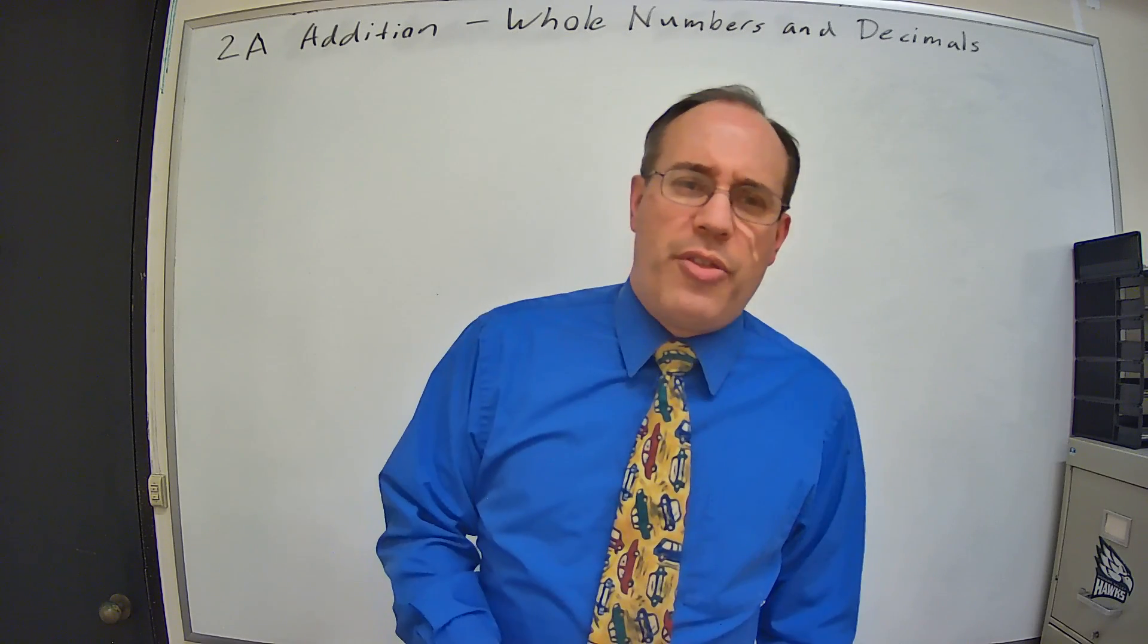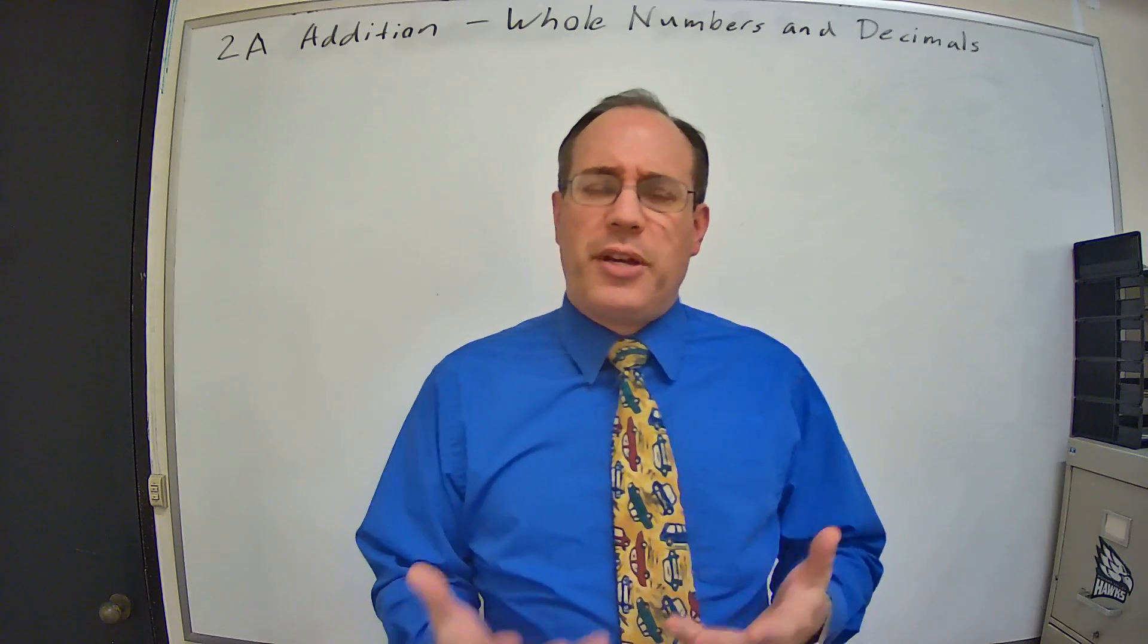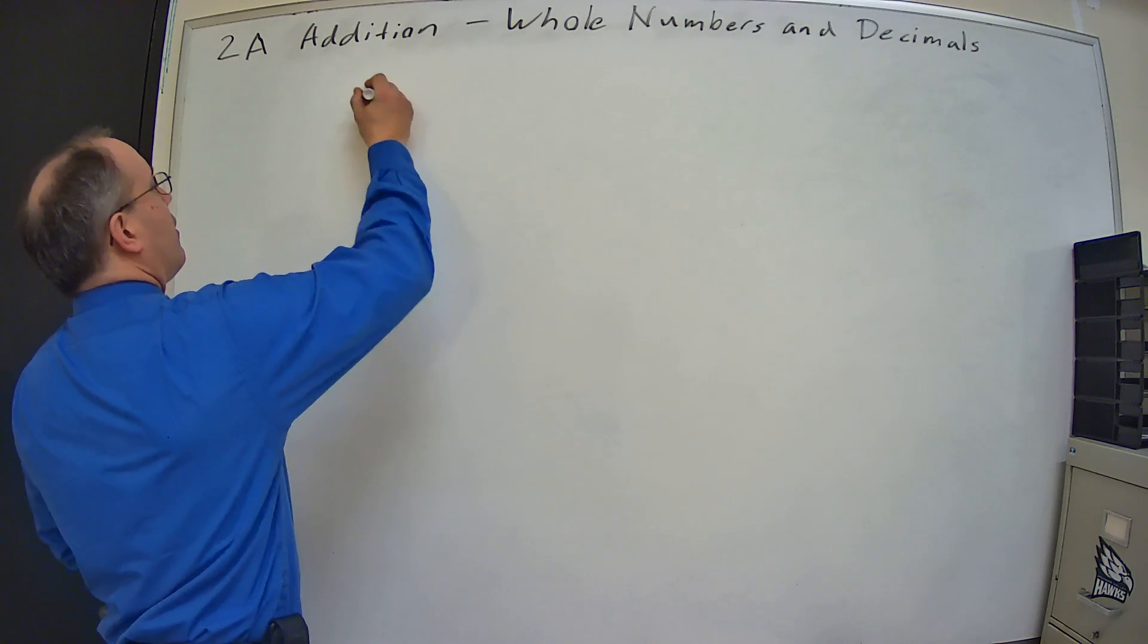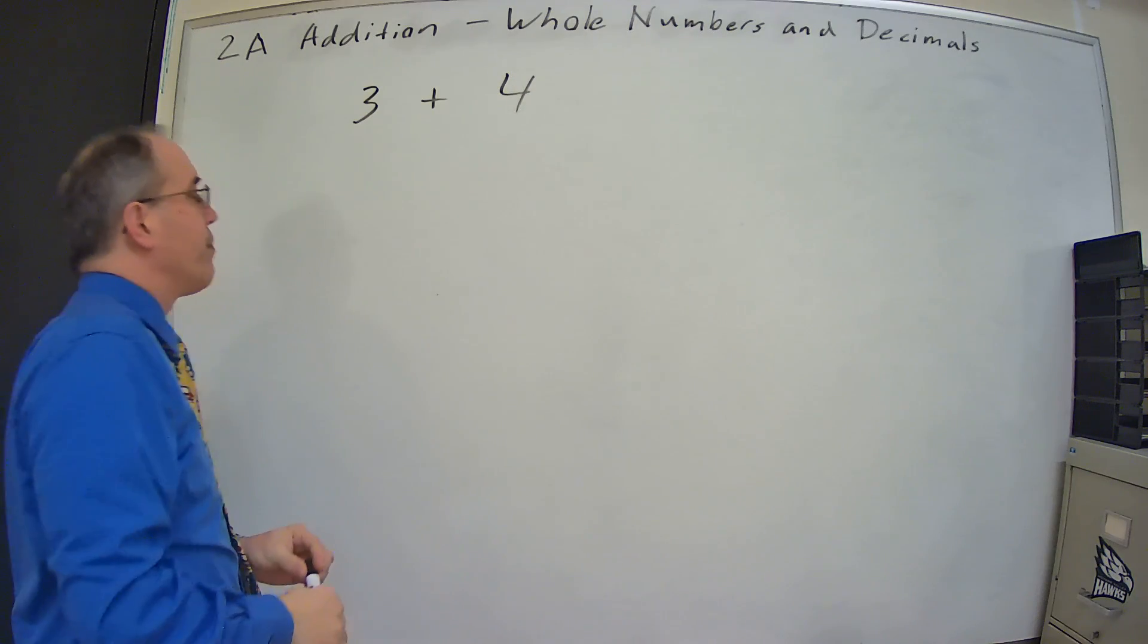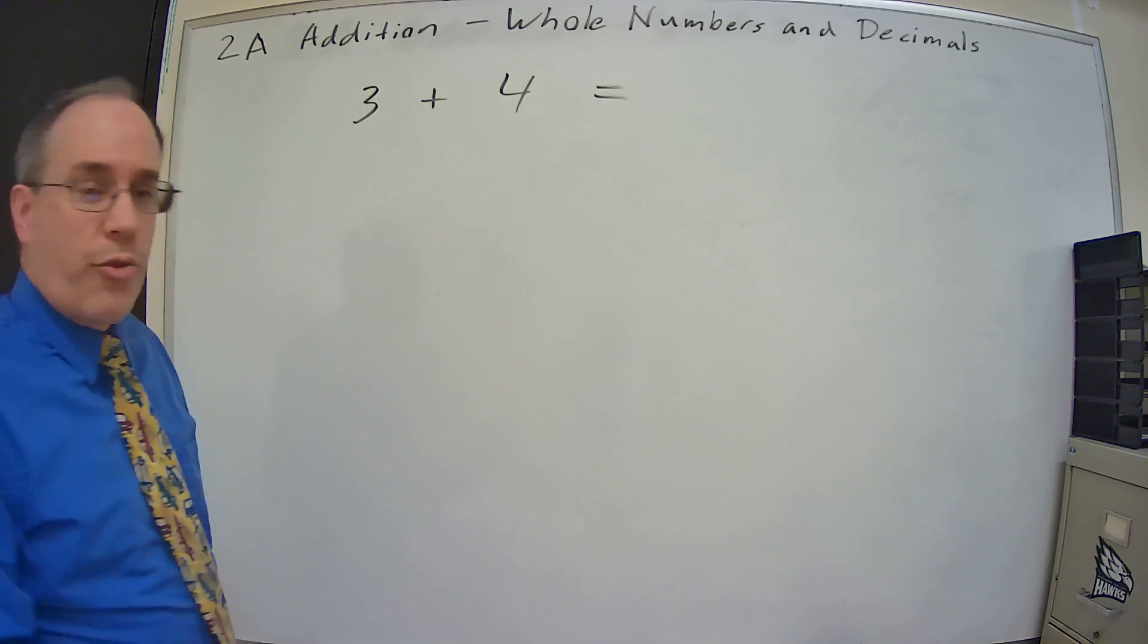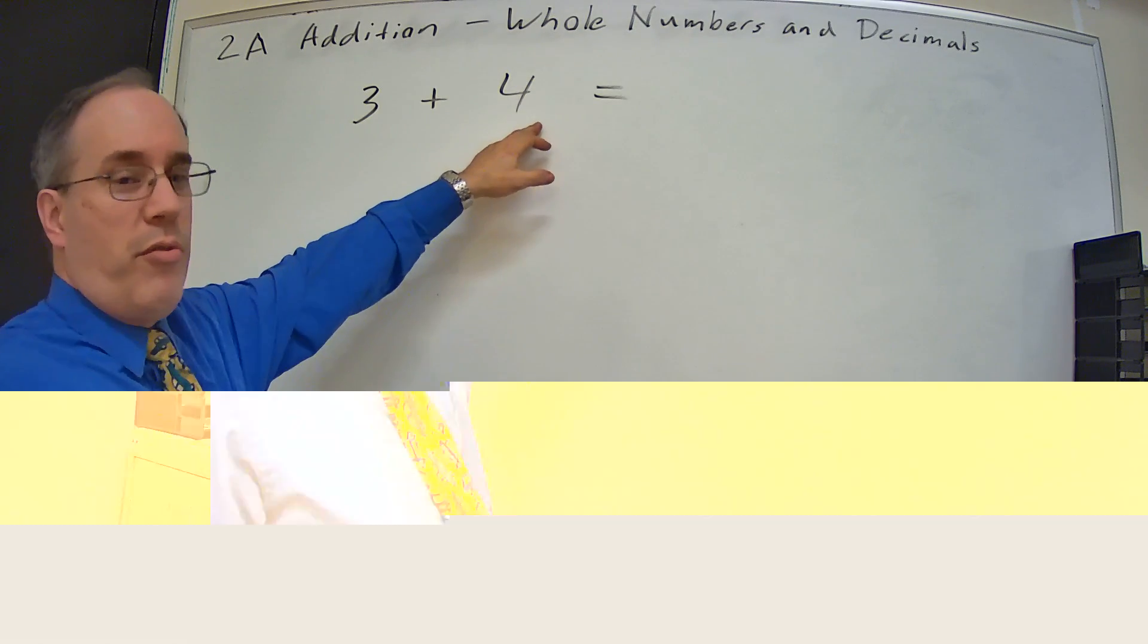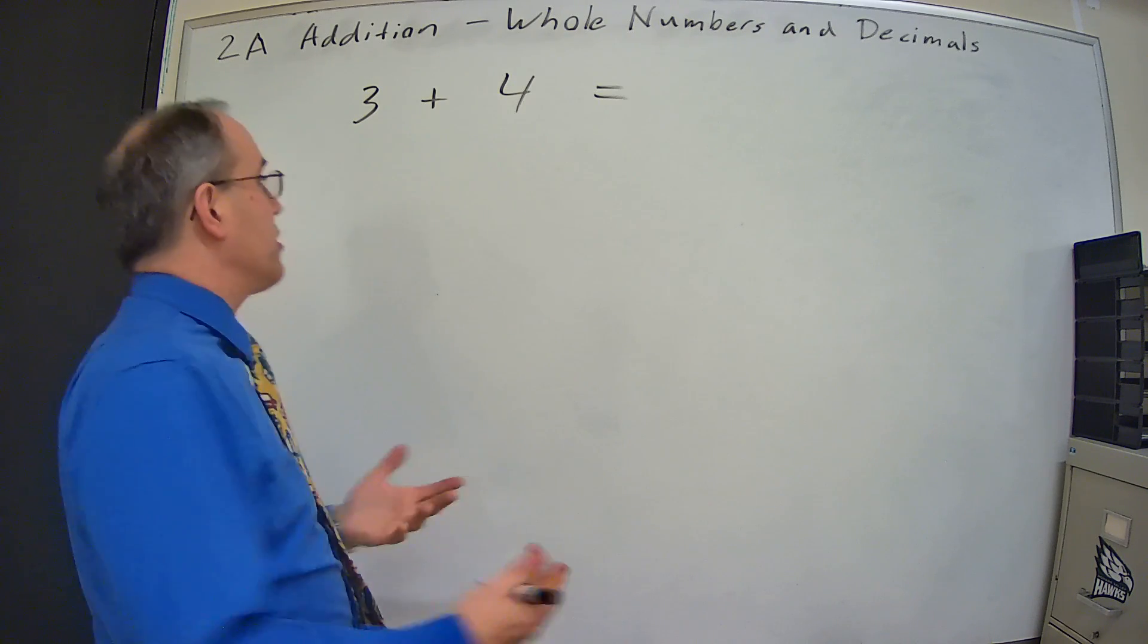So let's start out with some simple addition and use some pictures or diagrams to help us out. 3 plus 4 equals. So basically all we're doing is we're saying if we have three of something and we have four more of them, how much do we have in total? What's the total count?